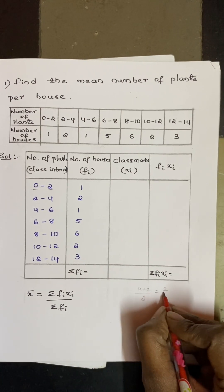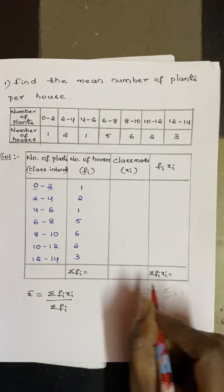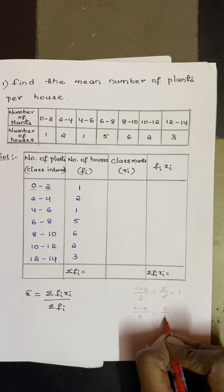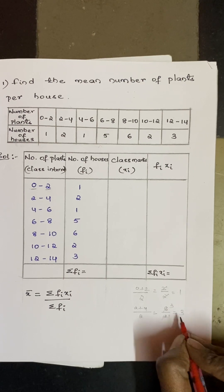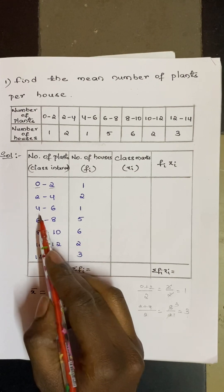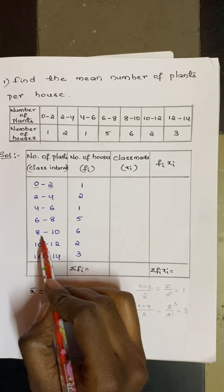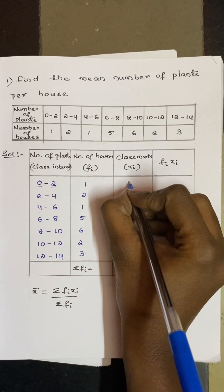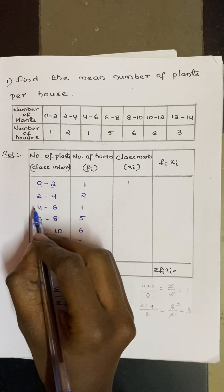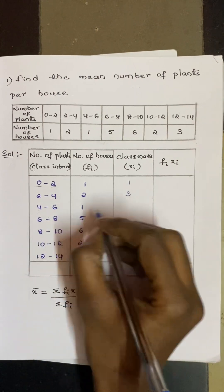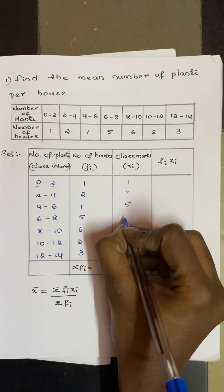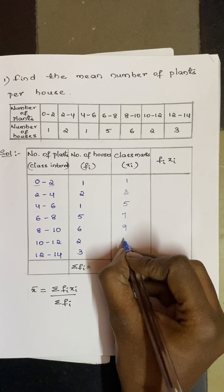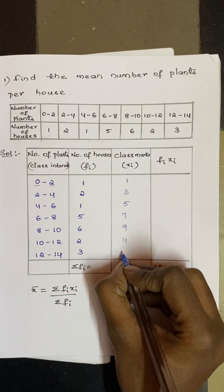For 0–2: (0+2)/2 = 1. For 2–4: (2+4)/2 = 3. For 4–6: (4+6)/2 = 5. For 6–8: (6+8)/2 = 7. For 8–10: (8+10)/2 = 9. For 10–12: (10+12)/2 = 11. For 12–14: (12+14)/2 = 13. This is how you get the xi values.